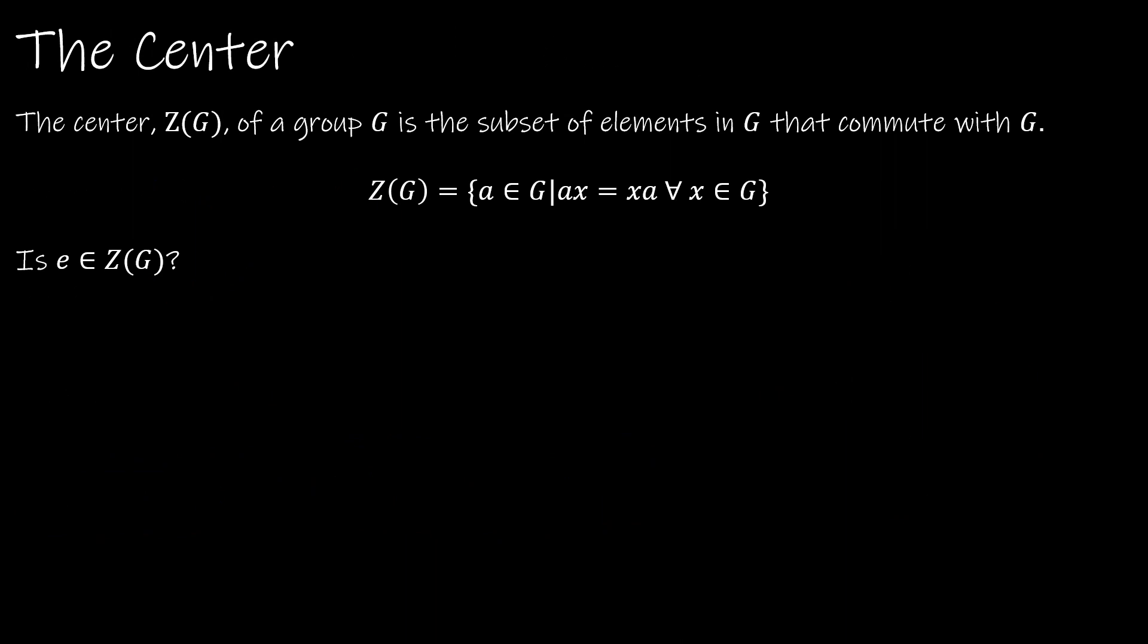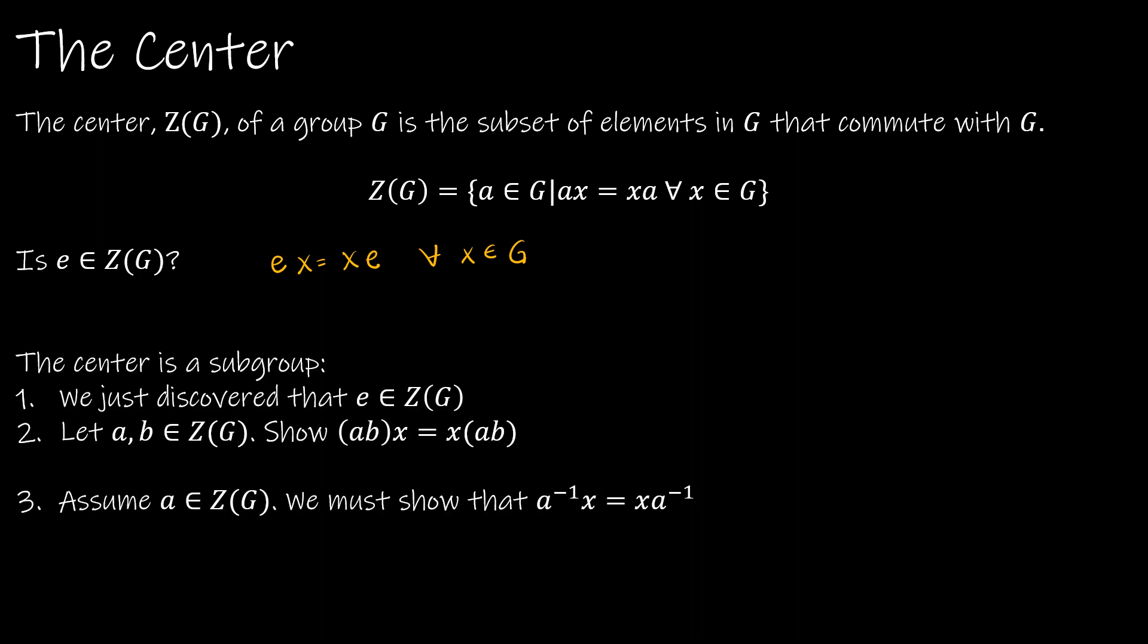Let's talk now about the other subgroup that we wanted to talk about in this video, which is the center. So the center of a group, denoted Z(G), is the subset of elements in G that commute with G. So essentially, we're saying any element that's in G where ax = xa for every element x in G. So it has to commute with all elements in G. So for instance, is e an element of the center? Well, it would make sense that ex = xe for all x's in G, because that is exactly what the definition of the identity tells us. So yes, the identity element will always be in the center.